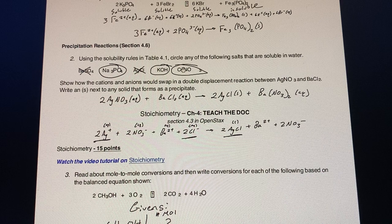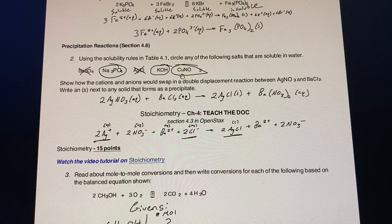And KOH is soluble because K is a group 1, and NO3 is always soluble.